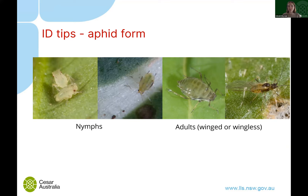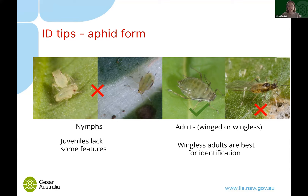Aphids are complicated little critters because they have lots of different life stages. Juveniles are called nymphs — they're very small and don't have wings. Adults can be either winged or wingless. You don't want to use small juveniles for identification because they have quite different features from adults. You also don't want to use winged adults. When looking at aphid identification, focus on the largest wingless adults — those are the best ones to use.